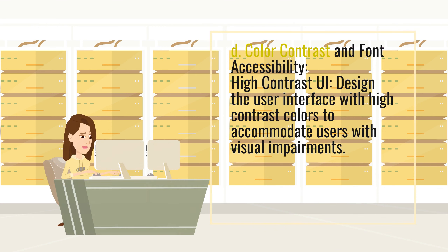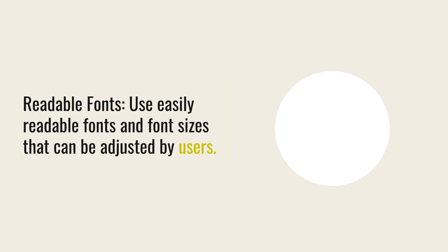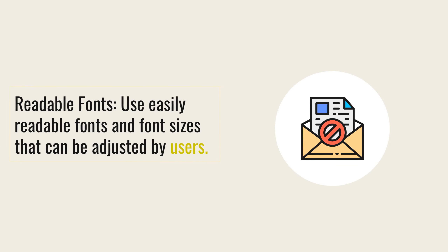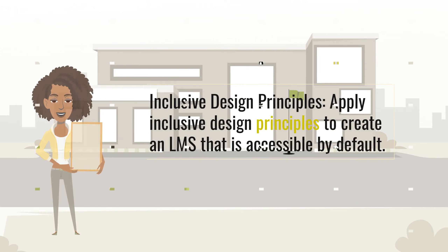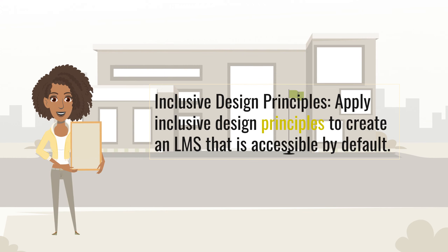D. Color contrast and font accessibility. High contrast UI: design the user interface with high contrast colors to accommodate users with visual impairments. Readable fonts: use easily readable fonts and font sizes that can be adjusted by users. E. User-centered design. User testing and feedback: engage users with disabilities in the testing phase to identify accessibility issues and gather feedback. Inclusive design principles: apply inclusive design principles to create an LMS that is accessible by default.